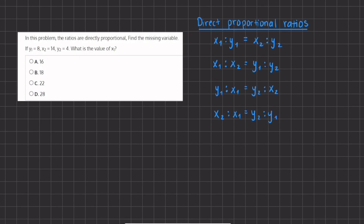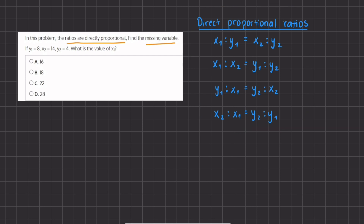In this problem, you are given that the ratios are directly proportional and you want to find the missing variable. When ratios are directly proportional, you can use any of these formulas to solve. In this case, we have y1, x2, and y2, and we want to find x1. Note that the colons shown here are another way of writing a division sign.